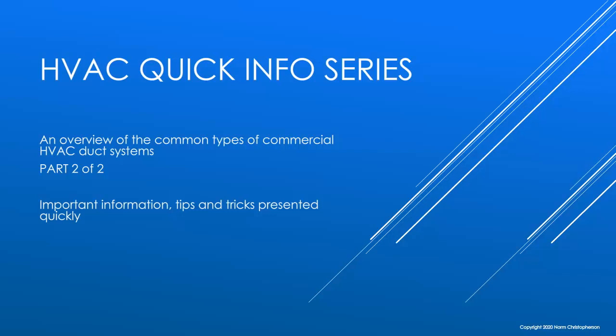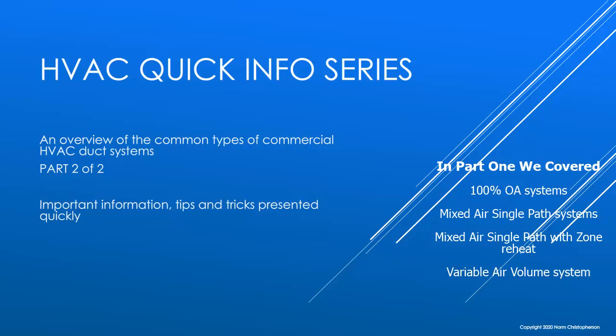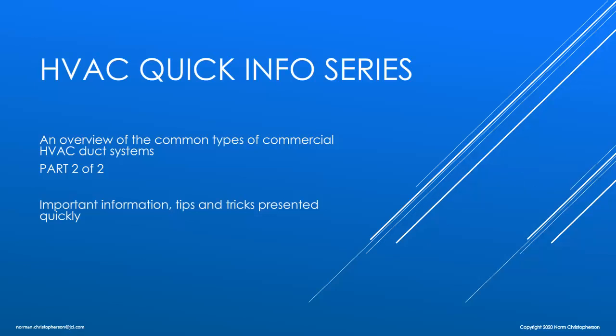Welcome to part two of our lesson on HVAC system types. In part one we covered the four system types which were the 100% outdoor air system, the mixed air single path system, a mixed air single path with zone reheat, and the variable air volume system. These two lessons are part of the larger series of lessons titled HVAC Quick Info Series.